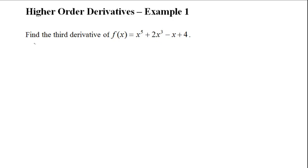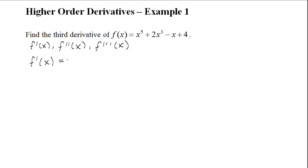The notation we're going to use is f prime of x for the first derivative, f double prime of x for the second derivative, and f triple prime of x for the third derivative. The first step is finding your first derivative. Before we do that, I'm just going to outline two of the rules that we're going to have to use in order to take the derivative.